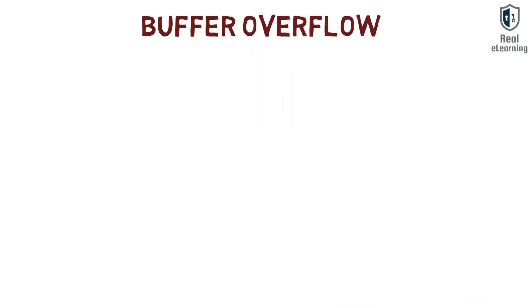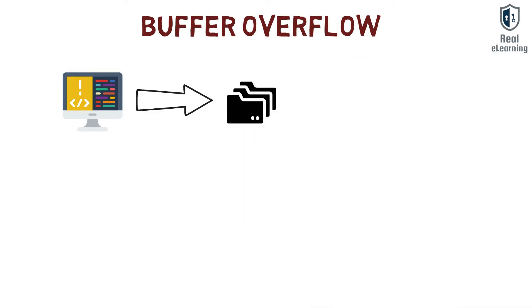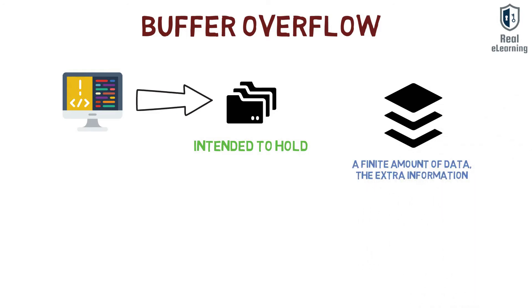A buffer overflow occurs when a program or process tries to store more data in a buffer, a temporary data storage area, than it was intended to hold. Since buffers are created to contain a finite amount of data, the extra information, which has to go somewhere, can overflow into adjacent buffers, corrupting or overwriting the valid data held in them.